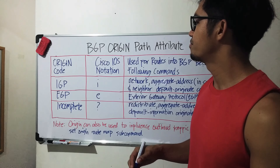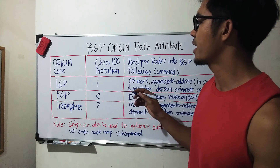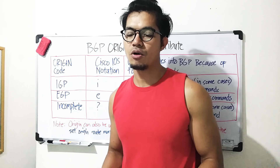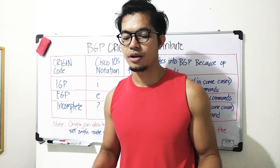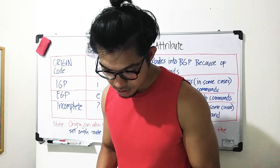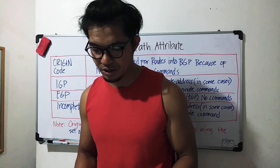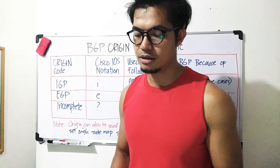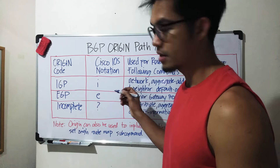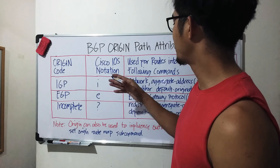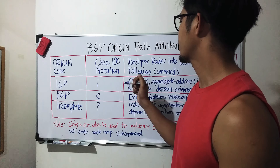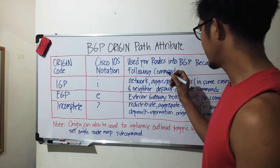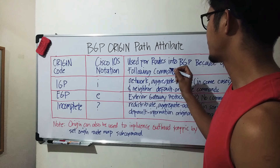Let's talk about this table I got from the book CCIE Routing and Switching Version 5.0 Official Cert Guide Volume 2, fifth edition, by Narbik Kocharians and Terry Vinson. The table has three columns: origin code, Cisco IOS notation, and useful routes injected into BGP because of the following commands.